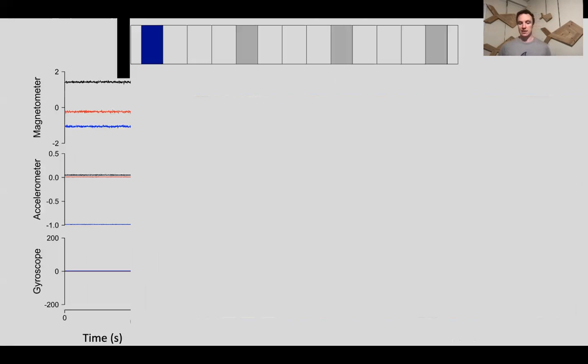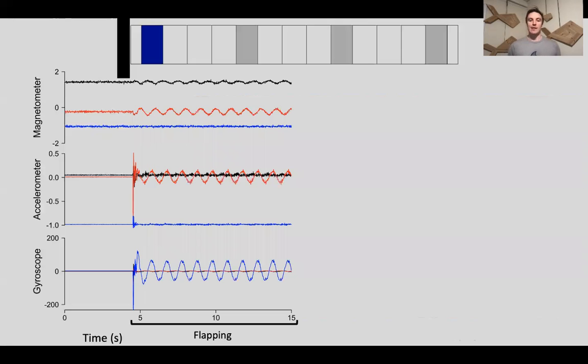So what does this data really look like? I'm just going to look at the very first tag in the series, this blue one here. When it's not being flapped, just sitting there, each thing is registering some amount of error and some baseline value. As we flap it, you begin to very clearly see signals of oscillation in the magnetometer, accelerometer, and gyroscope data.